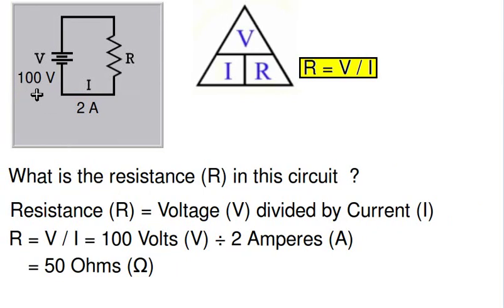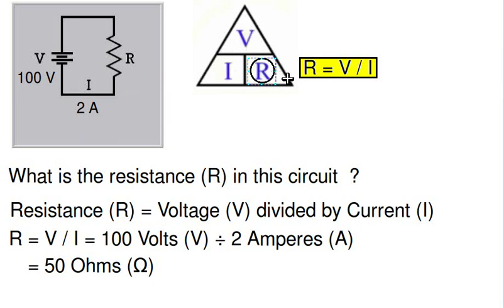Again the same circuit — this time we know the voltage is 100 volts pushing 2 amperes through an unknown resistance. What is the resistance? Using Ohm's law, the formula for resistance is R equals V divided by I — resistance equals voltage divided by current. So that would be 100 volts divided by 2 amperes, which gives us 50 ohms. A 100 volt battery pushes 2 amperes of current through a 50 ohm resistor.